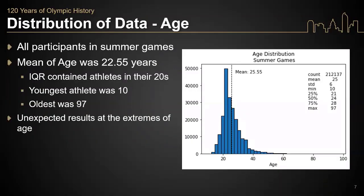We begin our exploratory data analysis by looking at the age distribution of participants from the Summer Games. The mean age of an athlete in the Summer Games was 22 and a half years old, with the IQR of individuals falling between the ages of 21 and 28. This is not surprising considering most younger people tend to excel at sports in this age range. The youngest athlete was 10 and the oldest was 97.